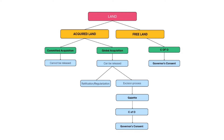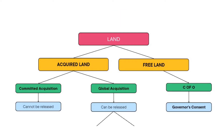Let us dive right into it. It is good to note that the government is in charge of every land in a country or state. There are two basic types of land: acquired land and free land. When you hear people say a land is freehold, it means that land is free of government acquisition and has always been within the family, handed down from generation to generation. It is the traditional landowners that occupy this land.